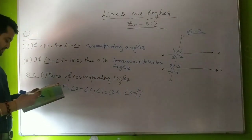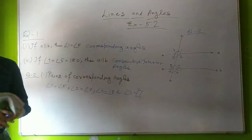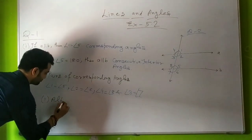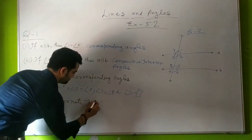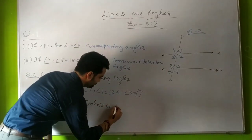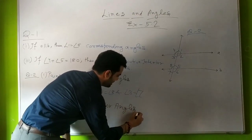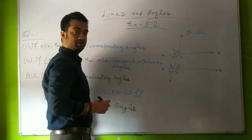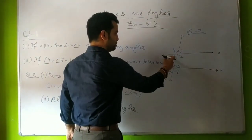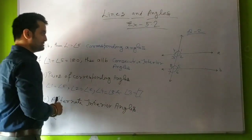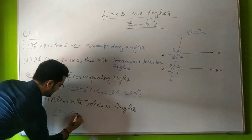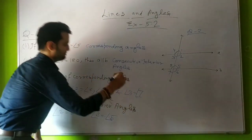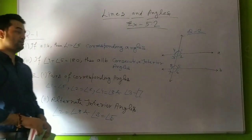The next part of question 2 asks us to write the pairs of alternate interior angles. Alternate interior angles are the angles which are in the interior and are on alternate positions. The interior angles are 2, 3, 8, and 5. So the alternate interior angle pairs are: angle 2 and angle 8, and angle 3 and angle 5.